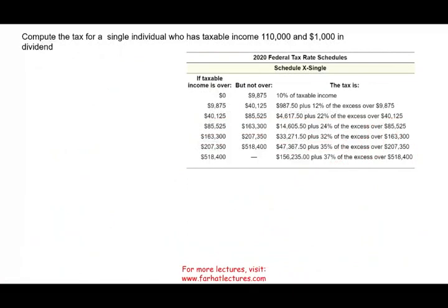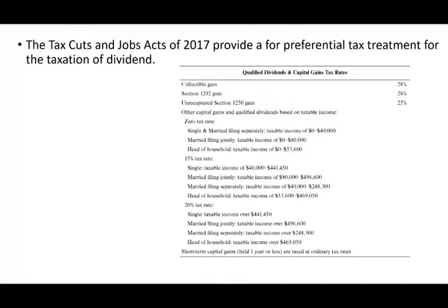Let's take a look at this example to illustrate the concept. Compute the tax for a single individual who has a taxable income of one hundred and ten thousand and one thousand in dividend. My first question: in which tax bracket does this individual belong? This is the single schedule — one hundred ten thousand is between eighty-five and one hundred sixty-three thousand, so their tax bracket is twenty-four percent. Now, how much will they pay on the one thousand dollar dividend? Since the individual is at one hundred ten thousand and they're single, that falls between forty thousand and four hundred forty-one thousand — therefore, they pay fifteen percent on the dividend.